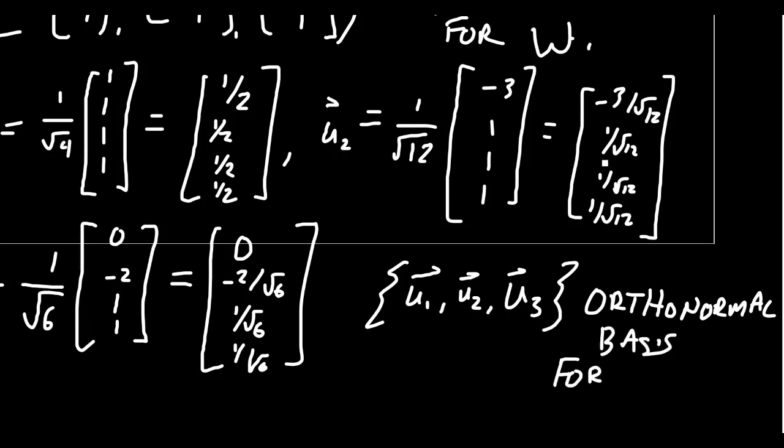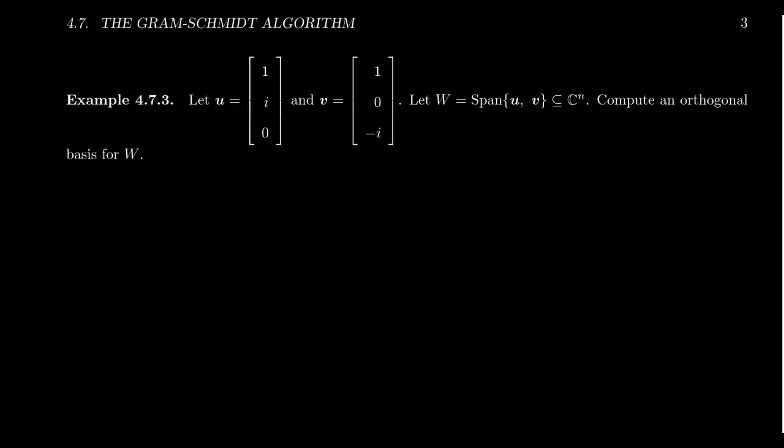So if we have a basis for any subspace, we can construct an orthogonal basis and then an orthonormal basis from that. And like I said, if you just have a spanning set, this process will automatically prune down that spanning set when you form the orthogonal basis. Whenever you have a vector you didn't need, it will actually produce a zero vector and just throw it out of the process.